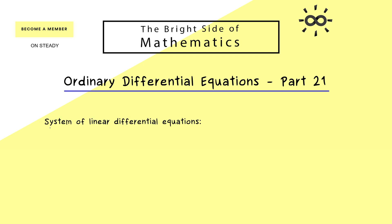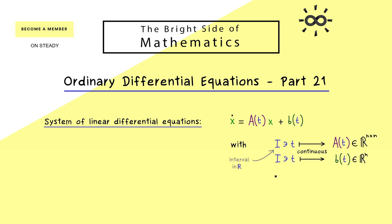Let's immediately start with our system of linear differential equations. In the general case this system is always written as x-dot equals A(t) times x plus b(t). There we have two important ingredients: in the domain of the time variable we have an interval or the whole line ℝ, and we have a continuous mapping from this interval into the matrices and into the vectors in ℝⁿ. So this is our system of linear ODEs.